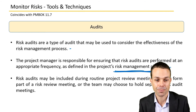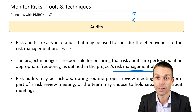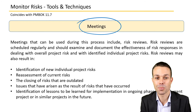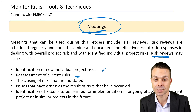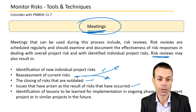Risk audits may be included during routine review meetings — for example, in Agile, a retrospective. We could ask: is risk traveling well? Is it not traveling well? And then we can put that back into our process and improve as we go along. Or the team may choose to hold separate risk audit meetings. That brings us to meetings, which ties a lot of these things together. Risk review meetings may result in identification of new project risks, reassessment of current risks — maybe they've been brought under control or are going out of control — the closing of risks that are now outdated, any issues that have occurred, and identification of lessons for our lessons learned register.